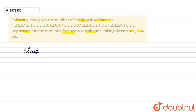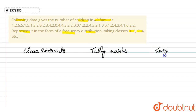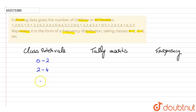We set up the class intervals, the tally marks table, and the frequency columns. The class intervals given are 0 to 2, 2 to 4. Since the maximum number of children in a family is 6, our class intervals will go up to: 0 to 2, 2 to 4, 4 to 6, and 6 to 8.